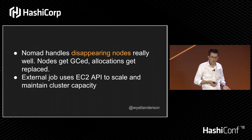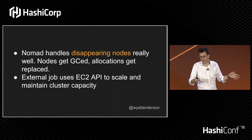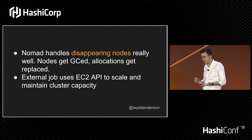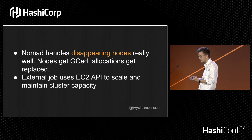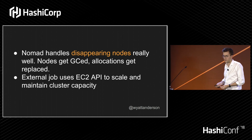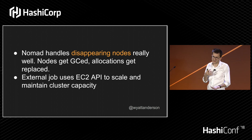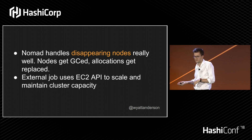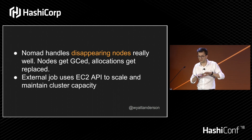Nomad handles disappearing nodes and rescheduled jobs really well. We tend to see either very rare terminations of spot instances, or we'll suddenly lose 15% of our entire fleet. The nodes get garbage collected with Nomad on a configurable timeout basis. Amazon is supposed to tell you when they're going to terminate a node — you're supposed to get two minutes of warning. I don't think we've ever actually seen that happen; nodes just disappear. So we use an external job that directly interacts with the EC2 API to scale and maintain cluster capacity. Because of some historical reasons we can't use auto scaling groups or spot fleets, but we haven't really needed to — we just watch our queue depth and watch for terminations and then scale up or down as needed.